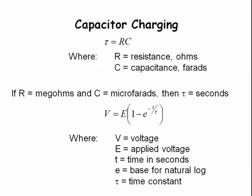The time constant, which we call tau for a capacitor, is R in ohms times C in farads. The formula for generating that plot of voltage versus time is V equals E times the quantity 1 minus e to the negative T over tau power, where V is the instantaneous voltage, E is the applied voltage in volts, T is the time in seconds, e is the base for the natural logs, and tau is the time constant.